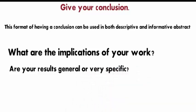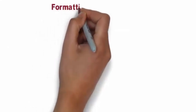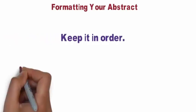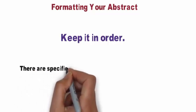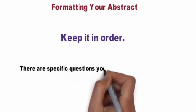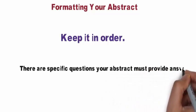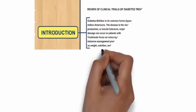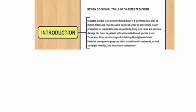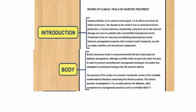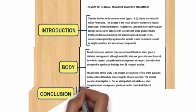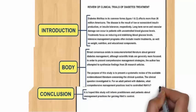Part two and three: formatting your abstract. Keep it in order. There are specific questions your abstract must provide answers for, but the answers must be kept in order as well. Ideally, it should mimic the overall format of your essay, with a general introduction, body, and conclusion. Many journals have specific style guides for abstracts. If you've been given a set of rules or guidance, follow them to the letter.